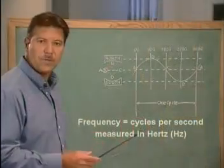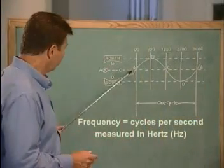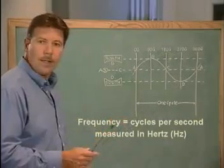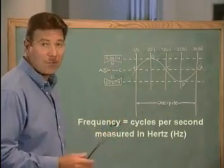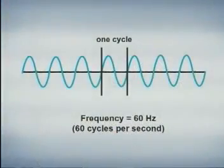The number of cycles that are completed in one second is called the frequency and is measured in hertz. In most areas of the United States, the frequency of AC power is 60 hertz or 60 cycles per second.